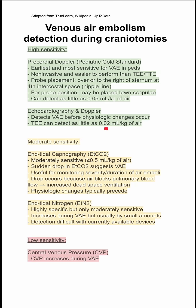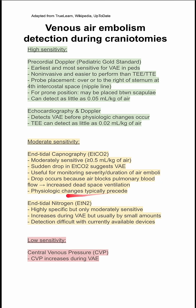The next two methods are moderate sensitivity. You have end tidal capnography, or end tidal CO2. This has moderate sensitivity and requires at least 0.5 cc per kilogram of air, so it's less sensitive than the previous methods. A sudden drop in end tidal CO2 suggests venous air embolism. It's useful for monitoring the severity or duration of air emboli, and the drop occurs because air blocks pulmonary blood flow, which increases dead space ventilation.